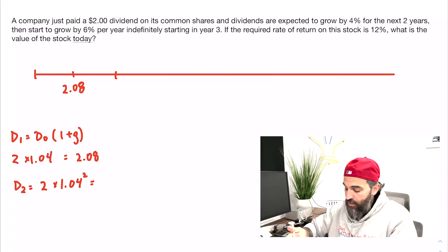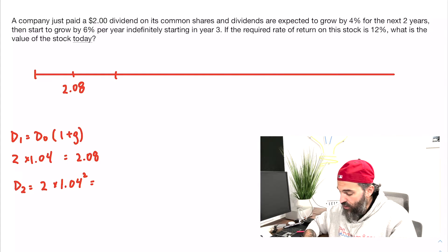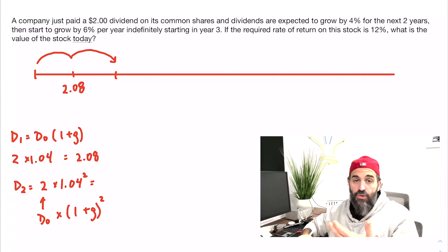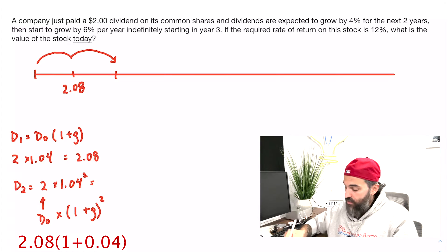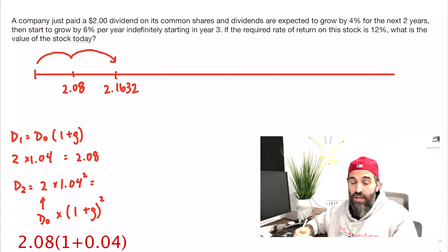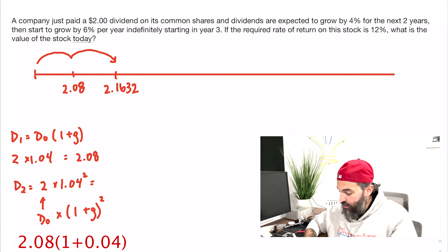All you need to do is apply the growth rate as many times as the growth rate is happening. In this case, I took $2.00, which was my D0, and multiplied it by one plus the growth rate squared, because I'm trying to get from D0 to D2. The math on that would be 2.1632. Alternatively, you could have just multiplied your D1, your 2.08, by one plus g or 1.04—that'll be the same thing.